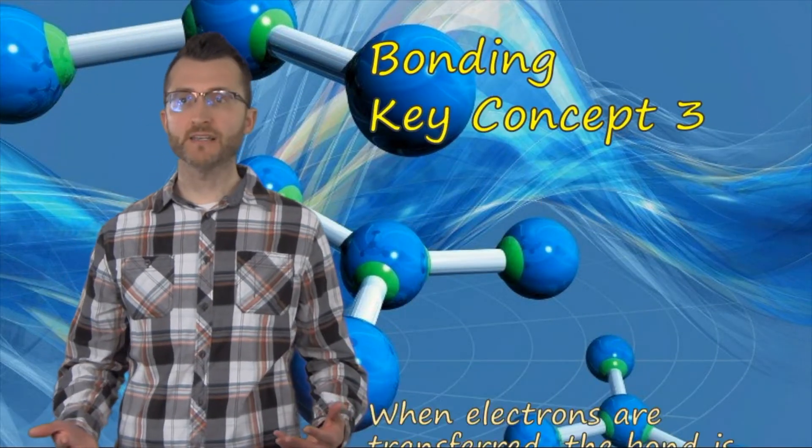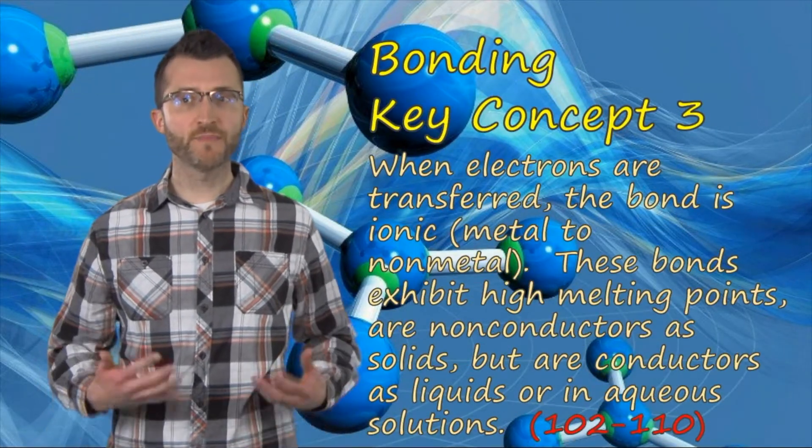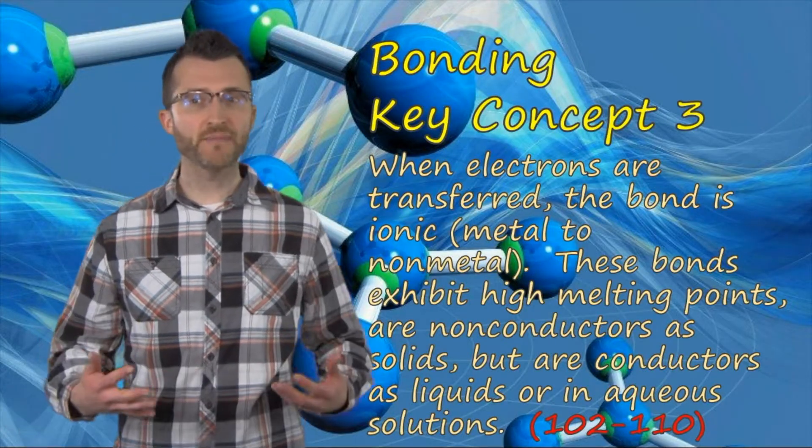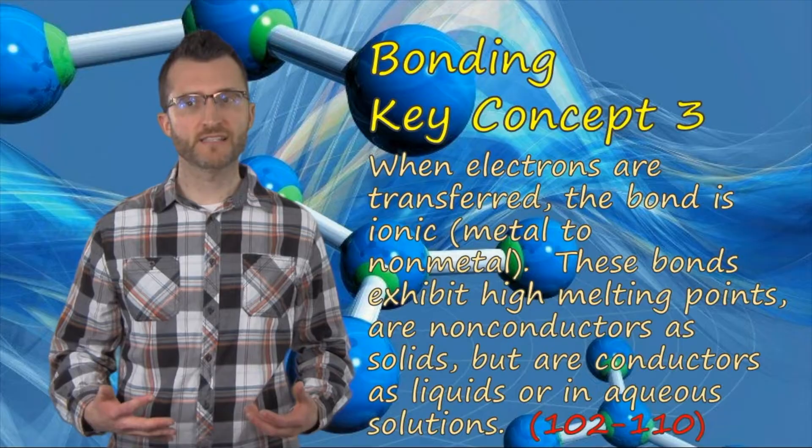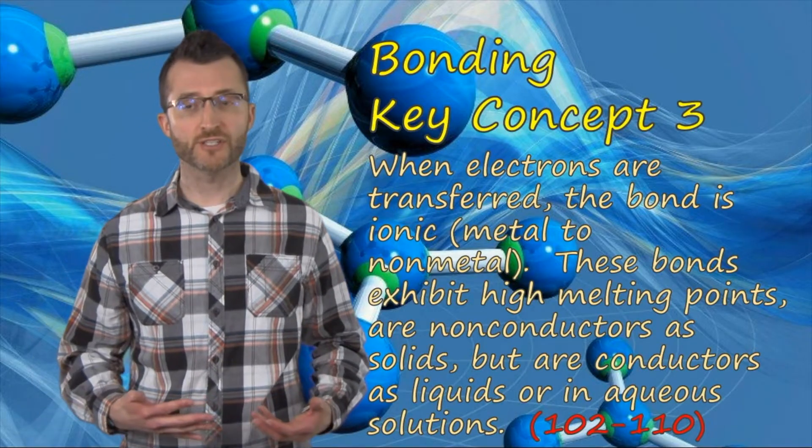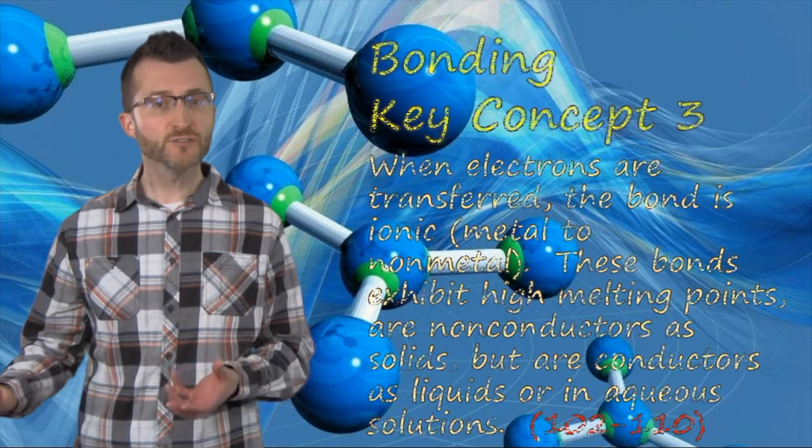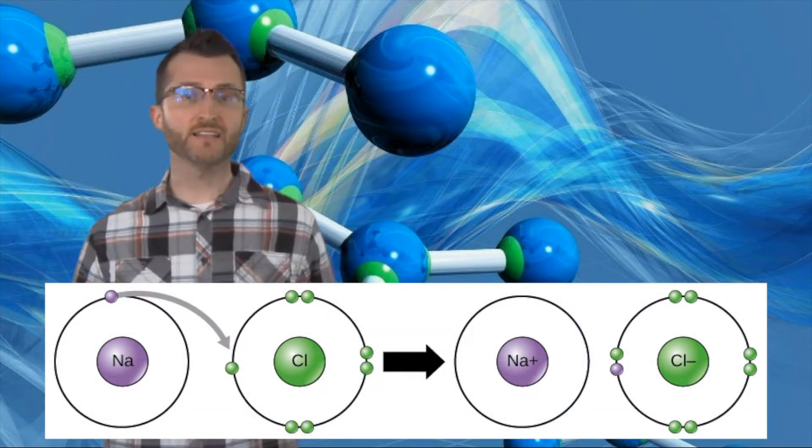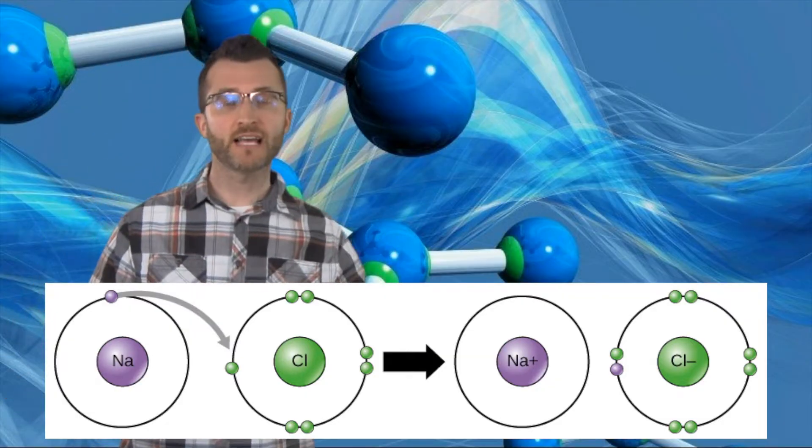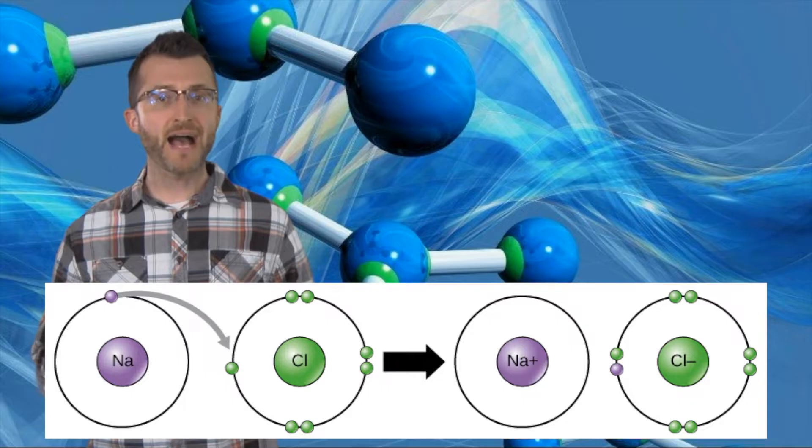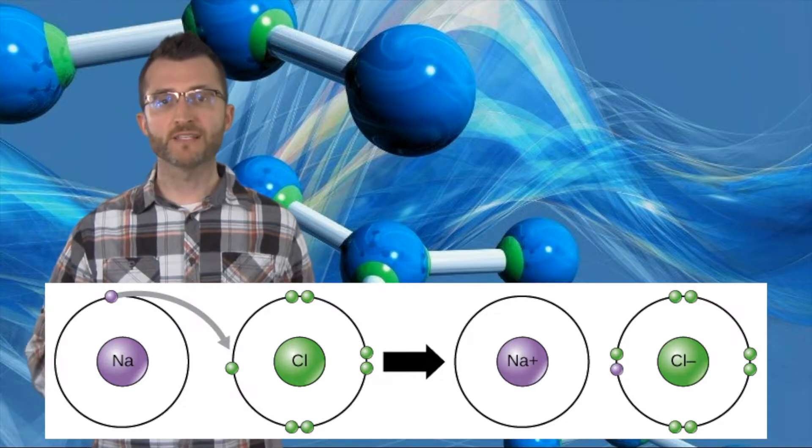Bonding key concept three. When electrons are transferred, the bond is ionic, metal to non-metal. These bonds exhibit high melting points, are non-conductors as solids, but are conductors as liquids or in aqueous solutions. Metals, which tend to lose electrons, can be paired with non-metals, which tend to gain electrons. There's a transfer of that electron from metal to non-metal. The metal forms a positive ion, the non-metal forms a negative ion, and the two ions attract to one another.